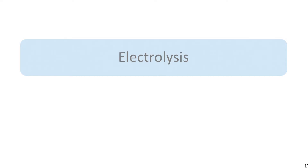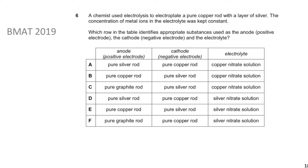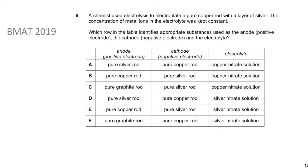Let's proceed to the first question: BMAT 2019 Question 6. A chemist used electrolysis to electroplate a pure copper electrode with a layer of silver. The concentration of metal ions in the electrolyte was kept constant. Which row of the table identifies appropriate substances used at the anode, the cathode, and the electrolyte?